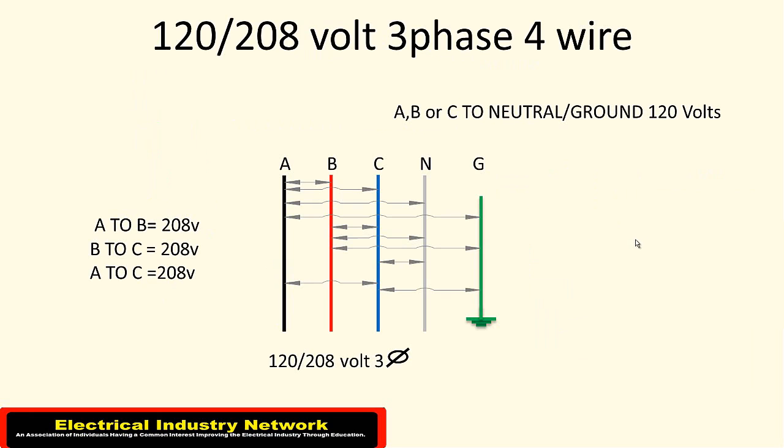This one is pretty common in commercial, light industrial applications. And you've got the 120/208 volt, three phase four wire. It'll be the A, B, C, and a neutral. That's the fourth wire.